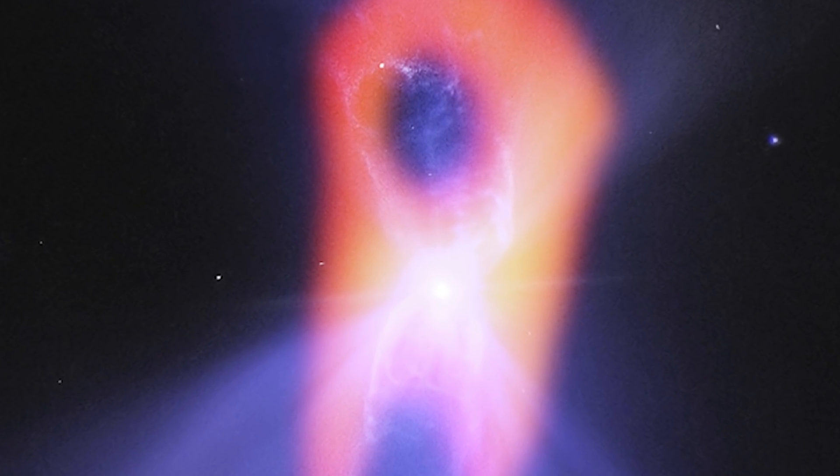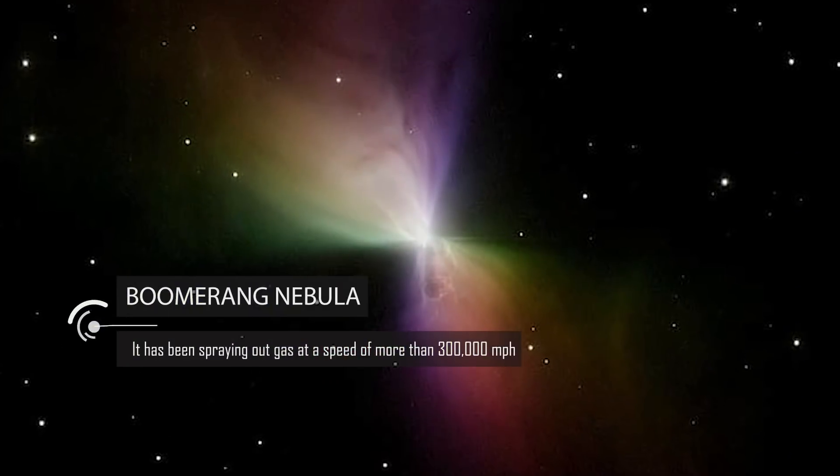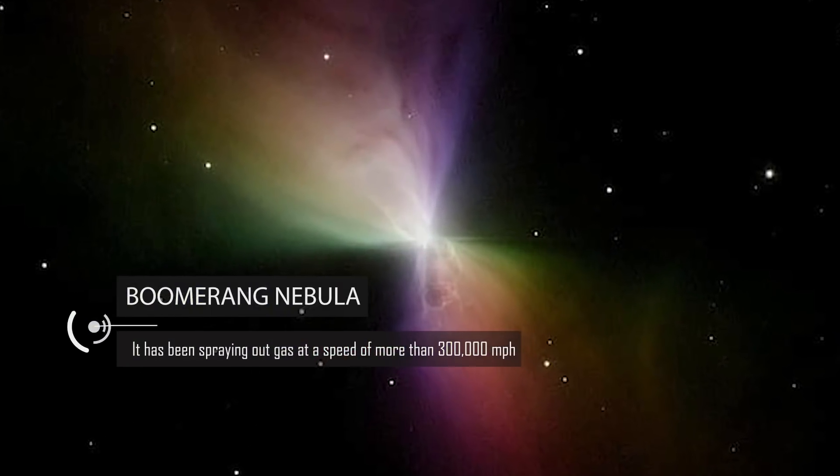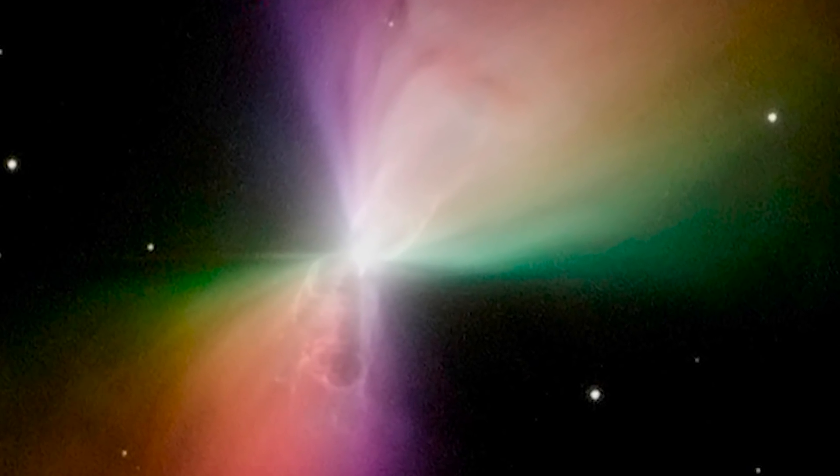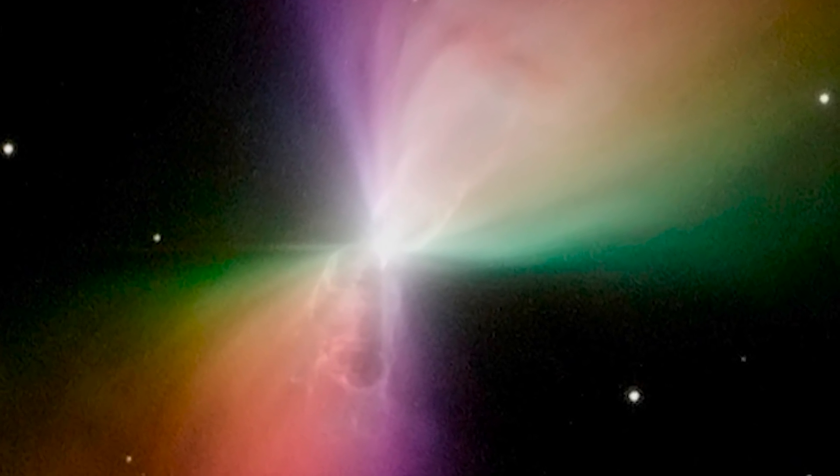There's a dying star that's three times heavier than our own sun at its core. Furthermore, for the last 1,500 years, the nebula has been spraying out gas at a speed of more than 300,000 miles per hour. That gas squeezed out of the nebula is approximately 1 Kelvin, which is the lowest natural temperature so far recorded.